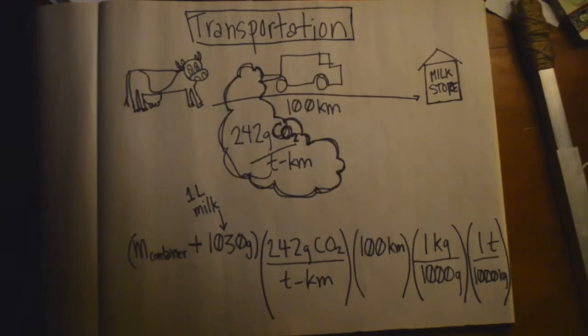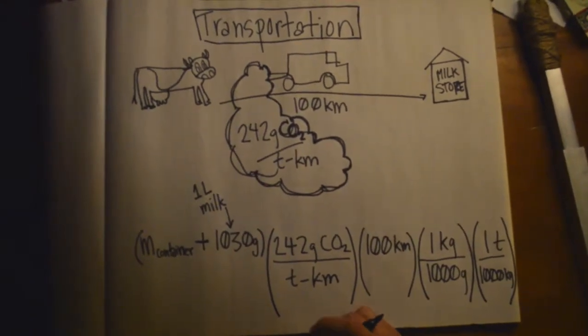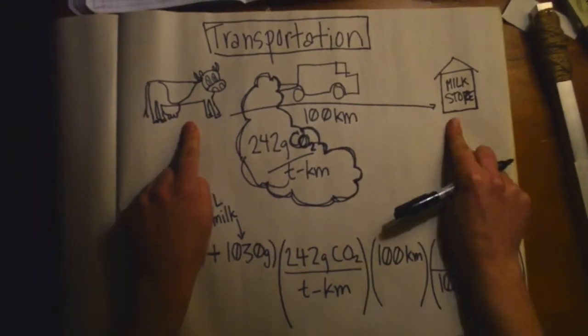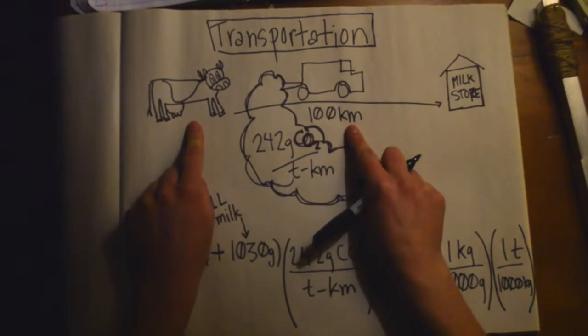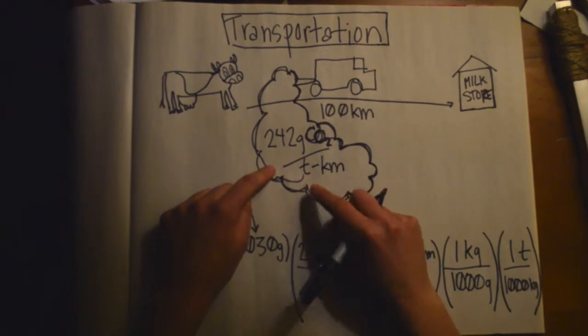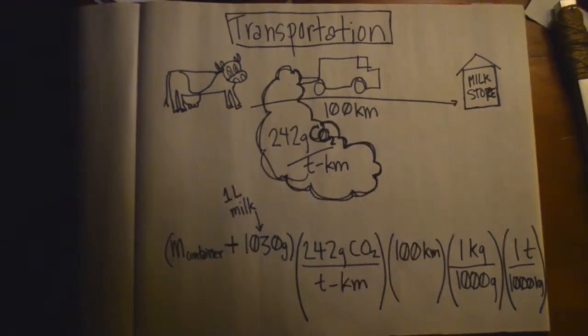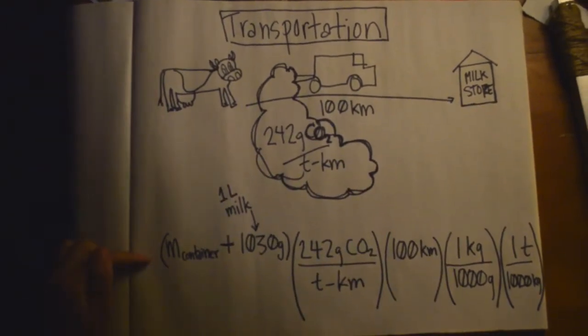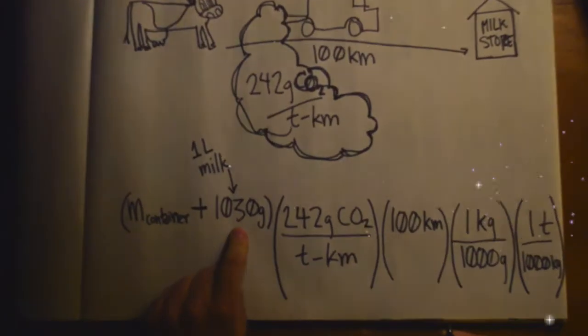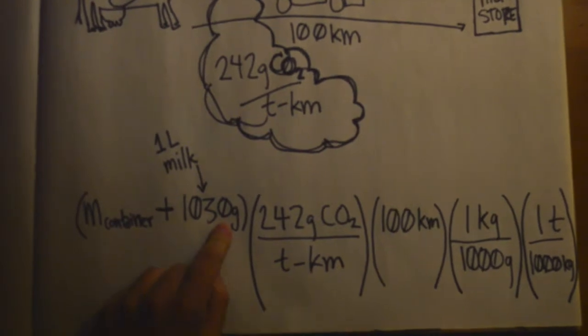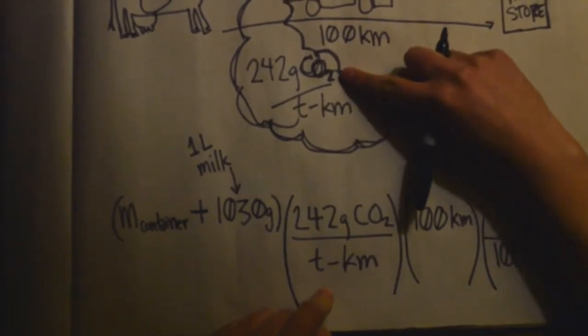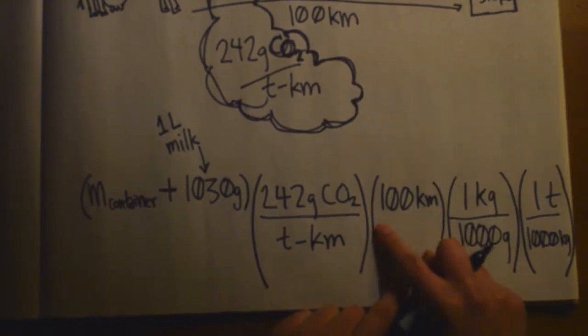The next step was to calculate the CO2 emissions from the transportation of each container. We arbitrarily chose 100 kilometers as the distance from farm to store and found that a truck emits 242 grams of CO2 per ton per kilometer. Therefore, to calculate the total emissions per container, we added the material to the mass of 1 liter of milk, which is 1,030 grams. We then multiply by the emissions of the truck per ton per kilometer and multiply that by 100 kilometers.